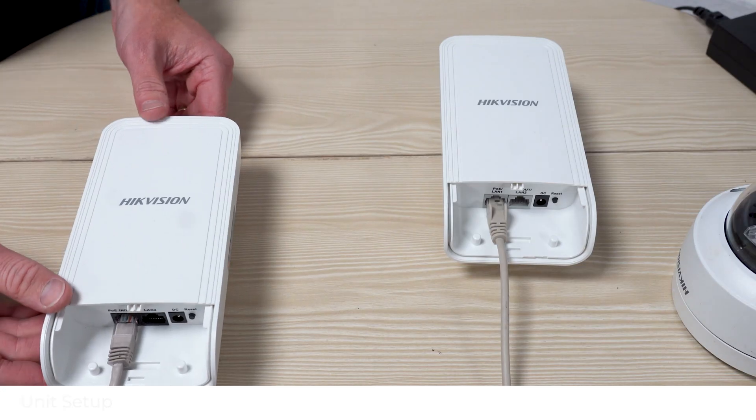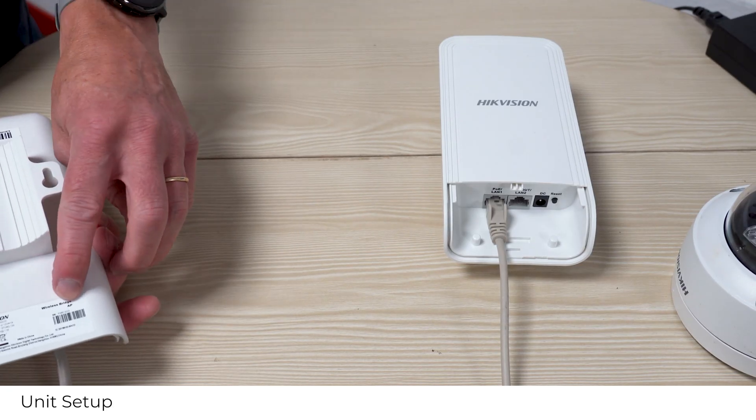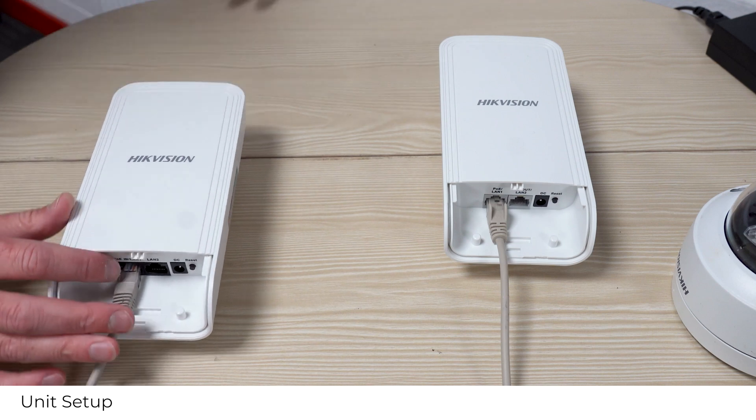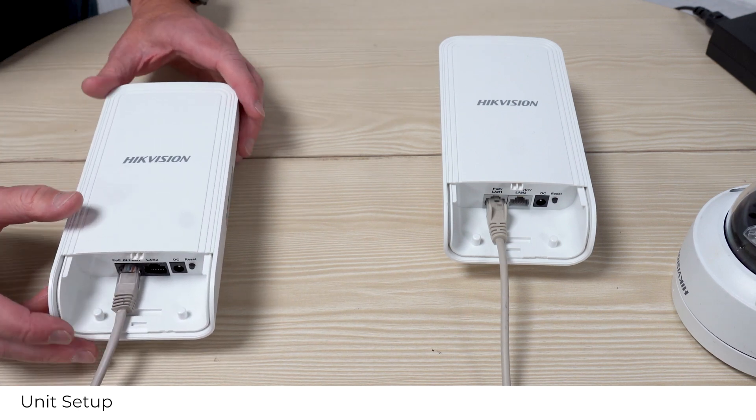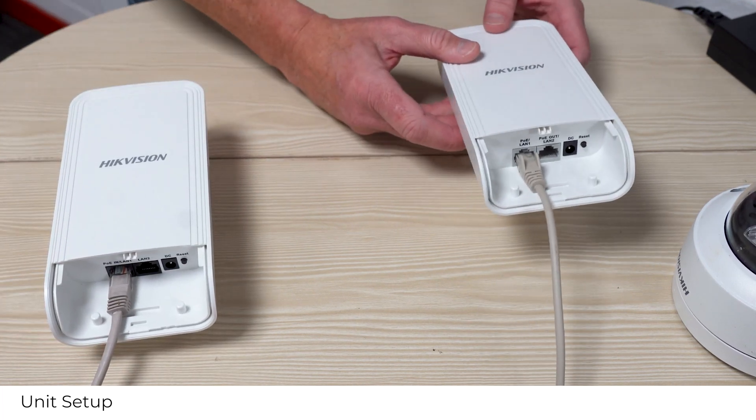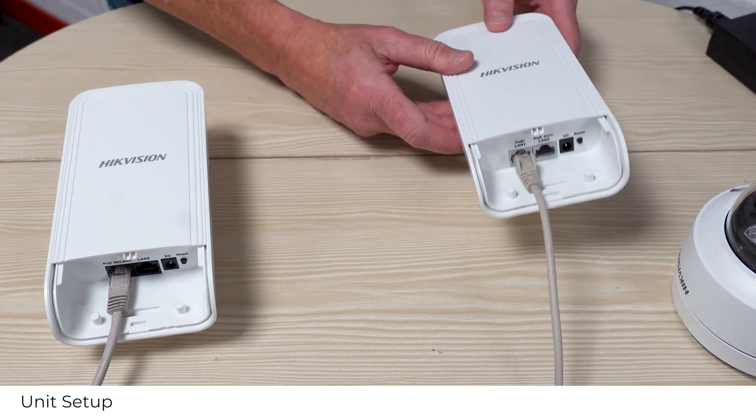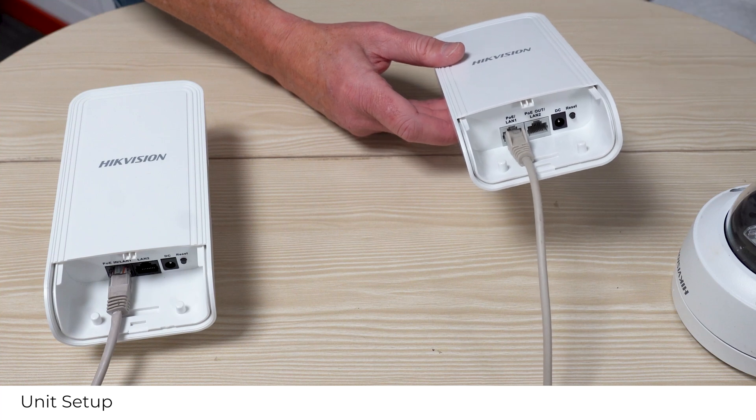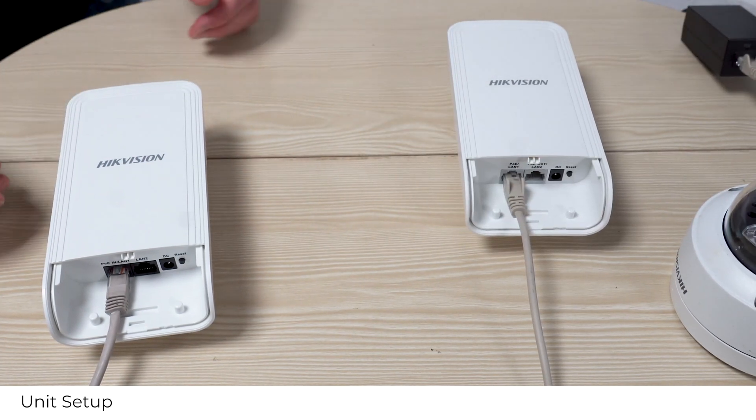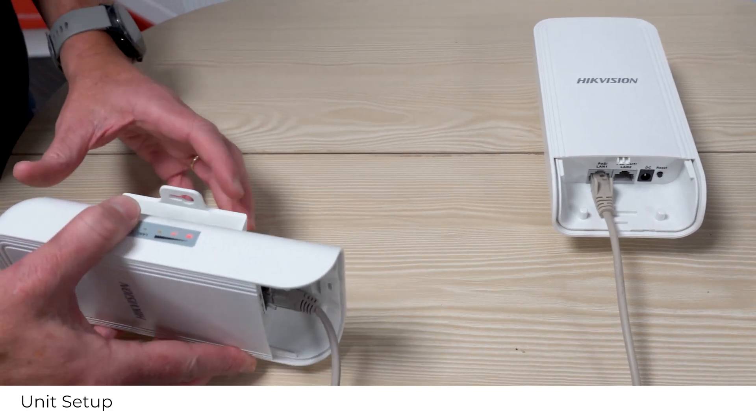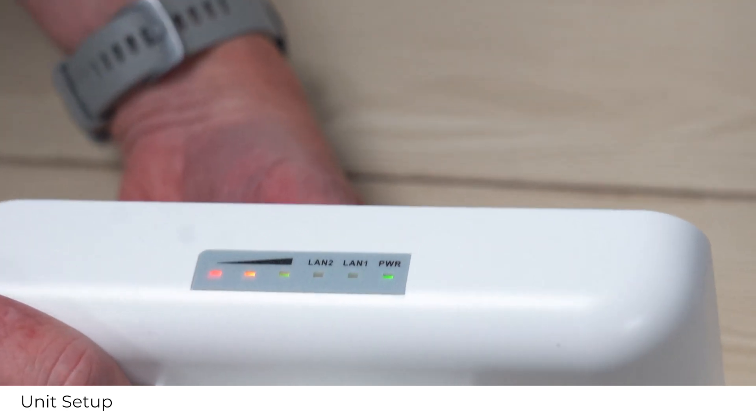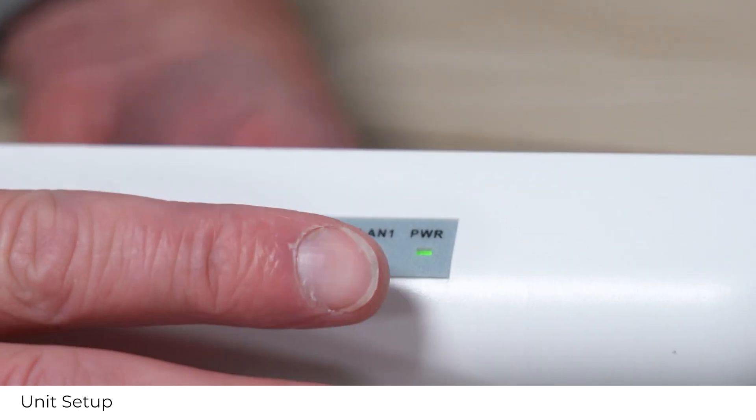So I've powered up the two units. This is the access point, so we're imagining this back at the main building. I've just used a patch lead into our PoE switch here in Mercury, so that's all I needed to get this guy powered up. Over here, this is our remote end, so we're picturing this down the shed, down at the gate, up a pole. As I mentioned, this one does need the injector, so I have local power and the injector and it's powered up. Let's have a look and see what we can tell from the indicators.